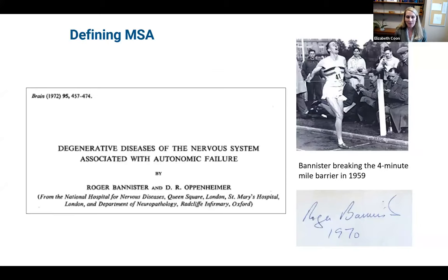From a historical standpoint, I love highlighting the contributions of Roger Bannister. Many people in the sports world know him for breaking the four-minute mile barrier, but he was also a medical student who later trained in neurology and pathology. He did incredible neuropathologic studies that gave us further information and helped define pathologically what multiple system atrophy really is as a distinct entity, separate from other similar disorders like dementia with Lewy bodies.